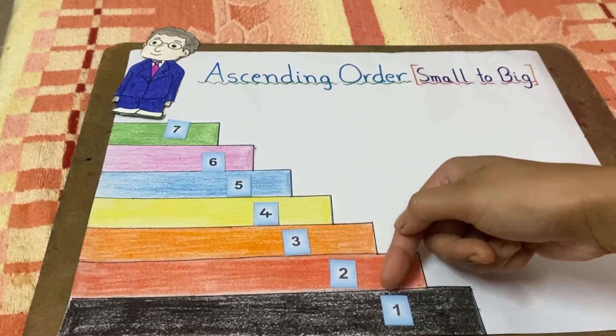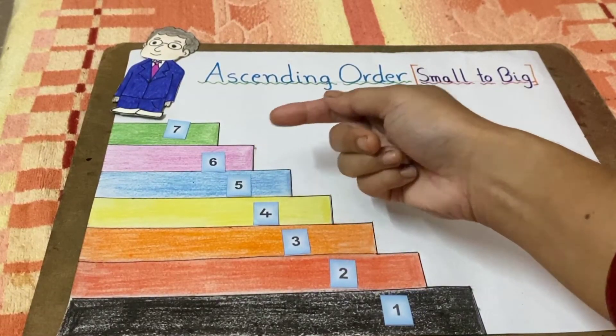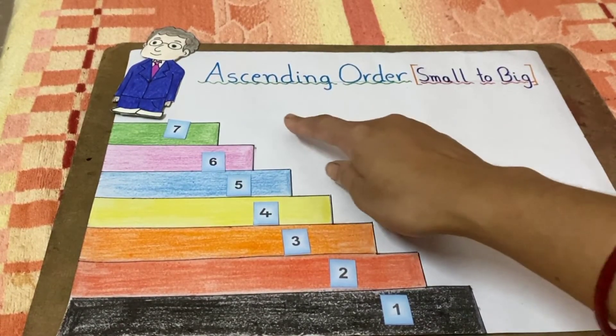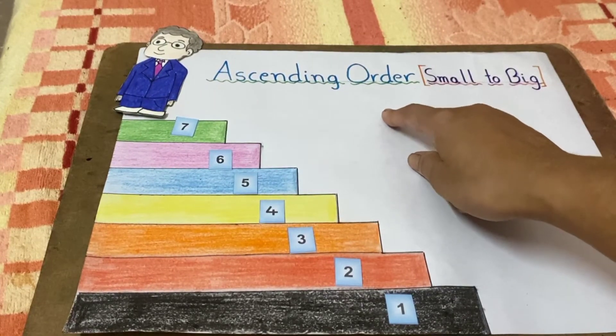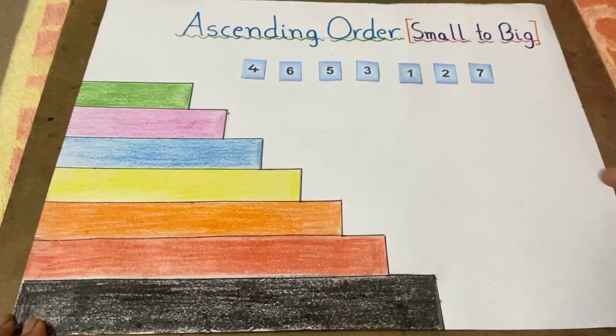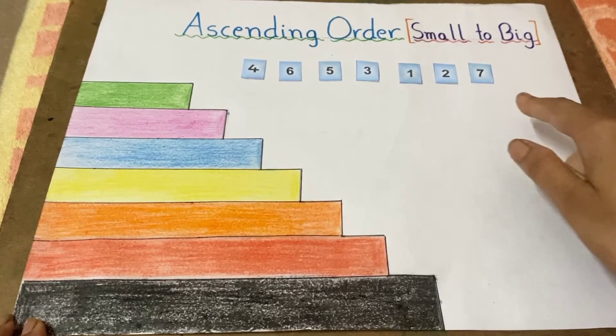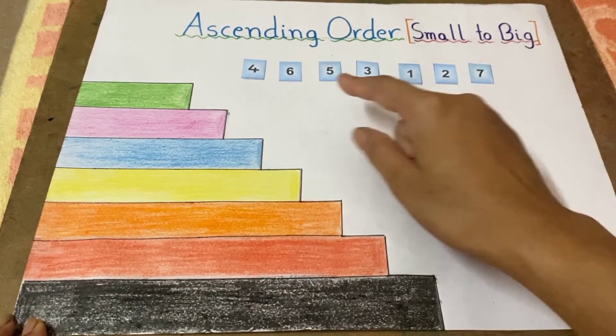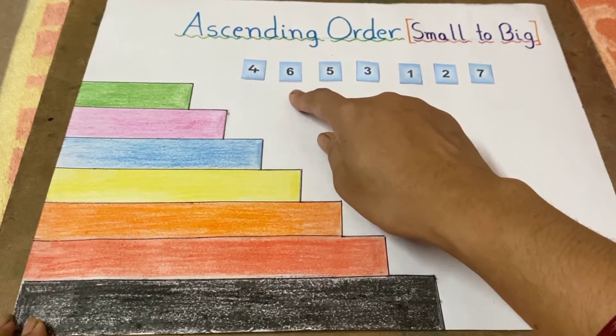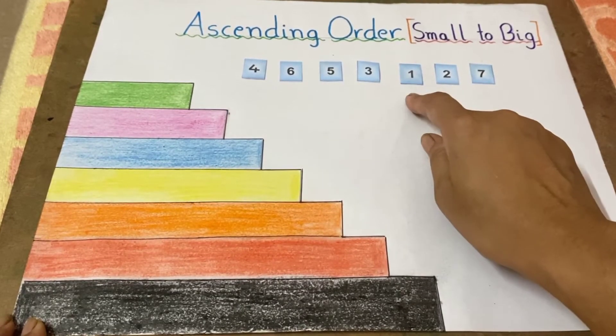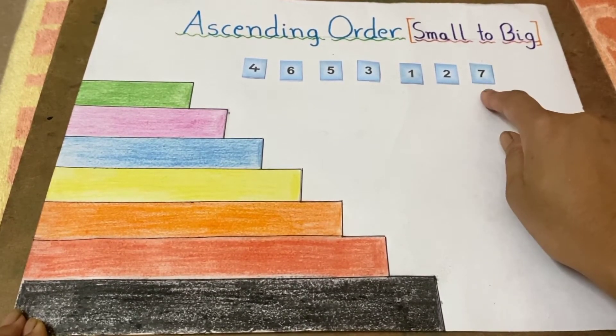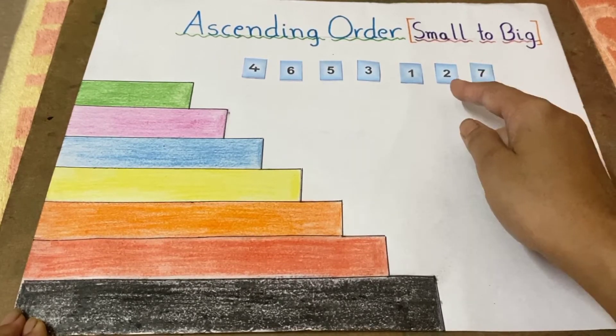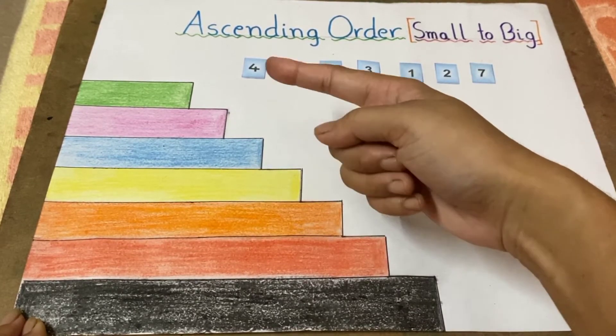Now let's do one example. Here are seven numbers: four, six, five, three, one, two, seven. Now children, can you put them in ascending order by labeling the steps correctly?